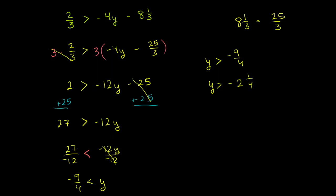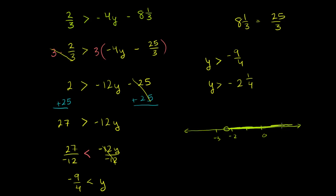If we wanted to graph this on the number line — let me draw a simple one here. This is 0, negative 1, negative 2, negative 3. Negative 2 and 1/4 is right here, and because it's a strict greater than, we're not going to include that point in the solution set, so we make an open circle there. Everything larger than that is a valid y that will satisfy the inequality.